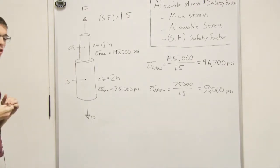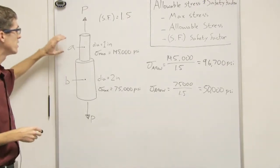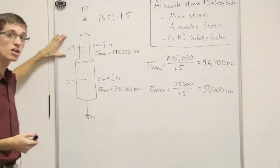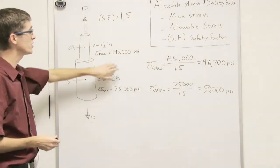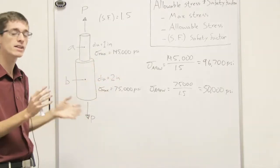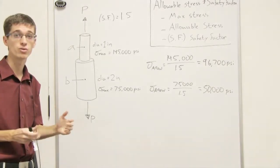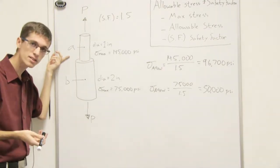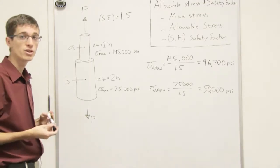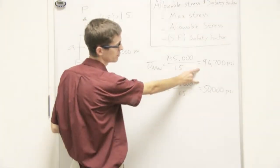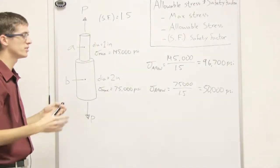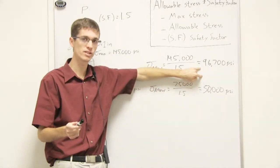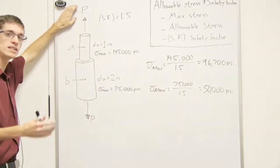You might assume the top piece will break first because it has a smaller diameter, and in many cases you'd be right. But remember they're made of different materials with different strengths, so don't make that assumption without solving for it. Because of the different diameters, each piece will experience a different stress, and they may not both reach sigma_allow at the same time. We have to find which one reaches its allowable stress first as we increase the force.